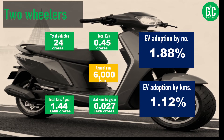Let us look at each category of vehicles — the total number of vehicles, total number of EVs, and the EV adoption rate. For two-wheelers, India has 24 crore two-wheelers, of which around 45 lakhs are EVs. Looking at the number of vehicles, the EV adoption rate is 1.88%. But if you consider each two-wheeler running roughly 6,000 kilometers a year, the EV adoption rate by kilometers is only 1.12%.